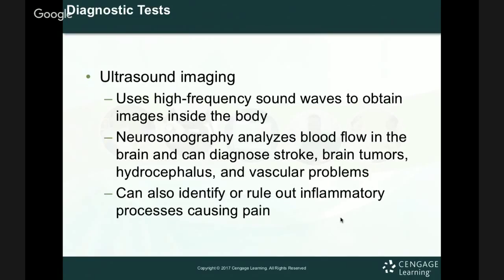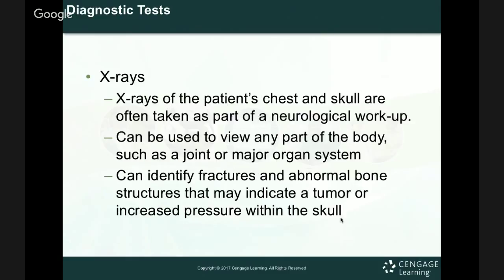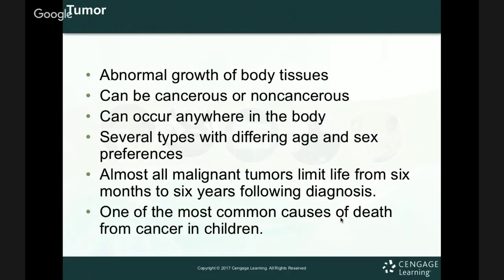An ultrasound uses high-frequency sound waves to obtain images inside the body — it can help diagnose stroke, brain tumor, and blood flow issues. X-rays help see broken bones, view joints to check if they're intact, and identify abnormalities like compound breaks or spiral fractures. Finally, a tumor is an abnormal growth of body tissue that can occur anywhere in the body — it can be cancerous or benign. These are the different portions associated with the spinal cord, central nervous system, and peripheral nervous system diagnostics.